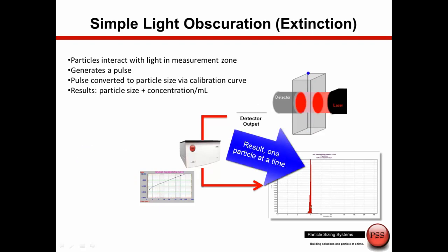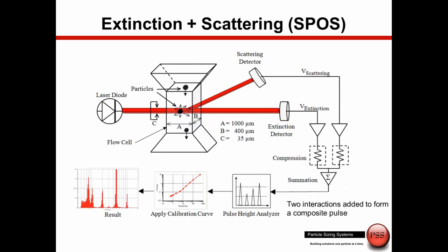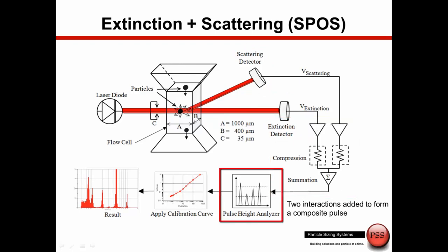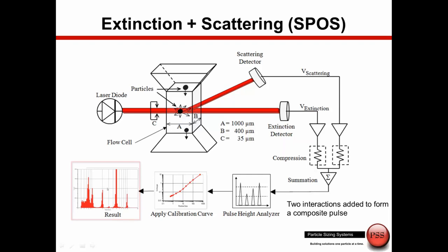We count and size these particles and build this distribution one particle at a time. The first improvement with the sensors created by Particle Sizing Systems is the addition of the scattering detector. Here we have the extinction detector, and here we have the scattering detector. We take these two pulses, sum them together, feed that combined pulse into the pulse analyzer, and then through the use of the calibration curve build up the results one particle at a time.